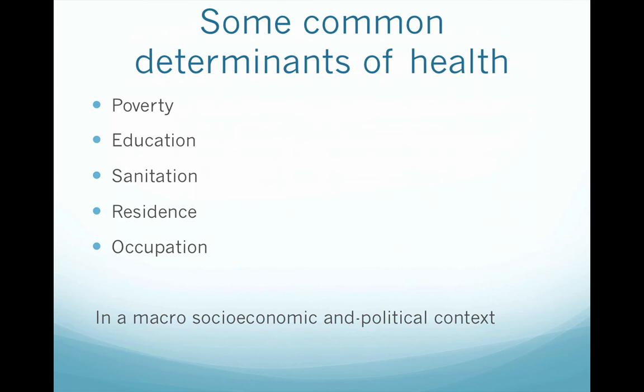Some of the common determinants of health are poverty, education, sanitation, residence, and occupation. There are a few more mentioned in the textbook, but these are the main social determinants of health, and it's quite clear how they could affect your access to health care and your overall health status.